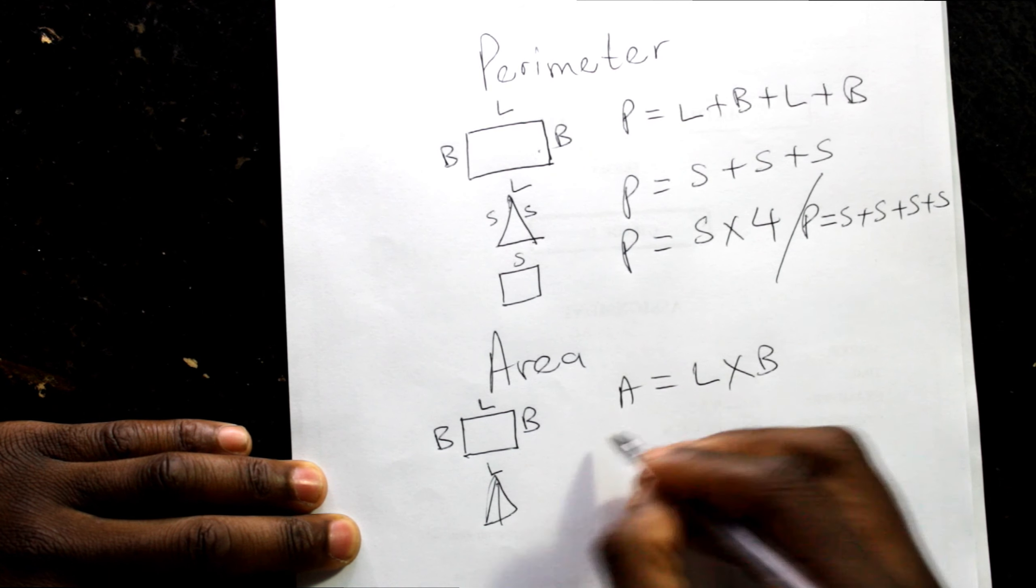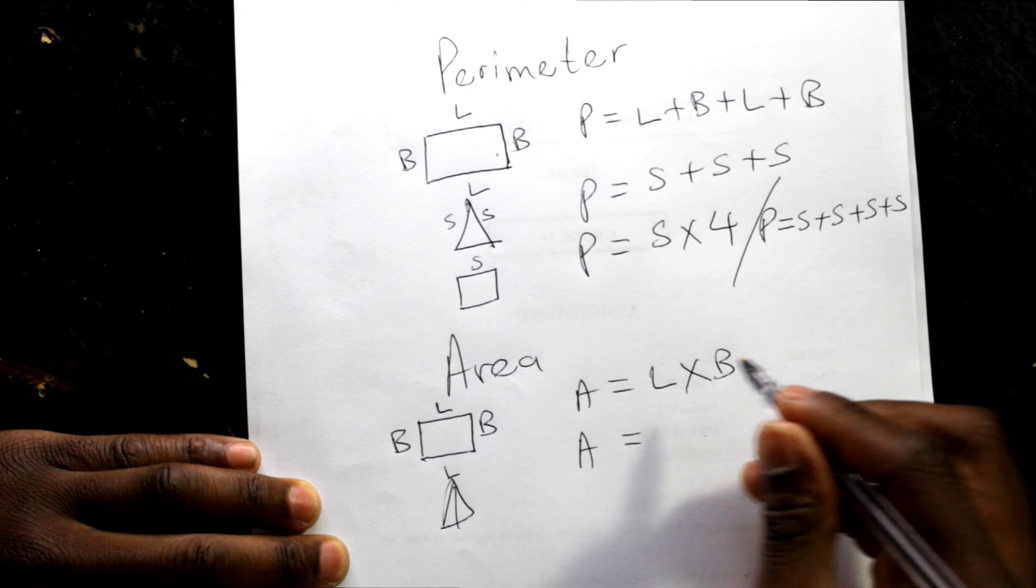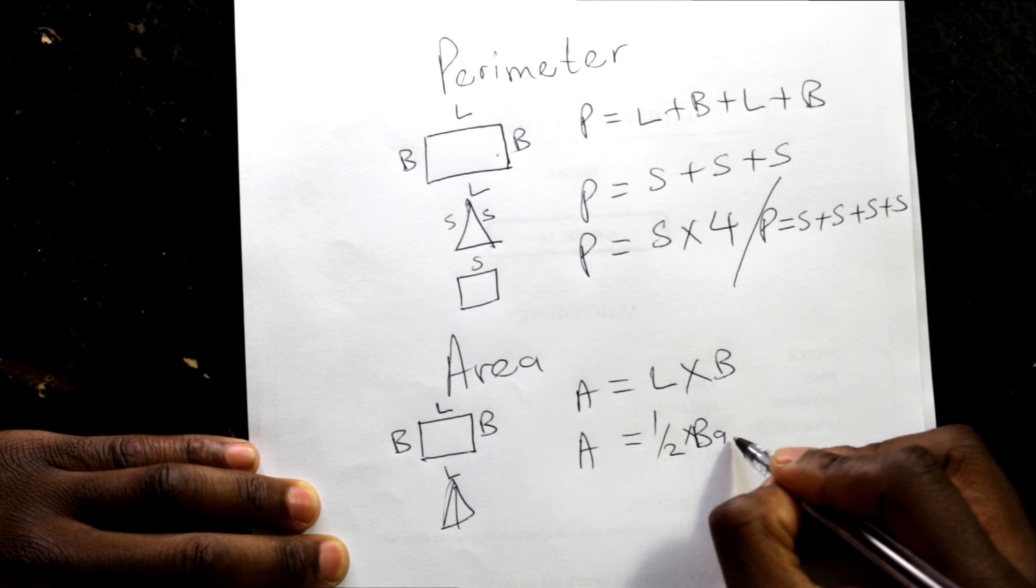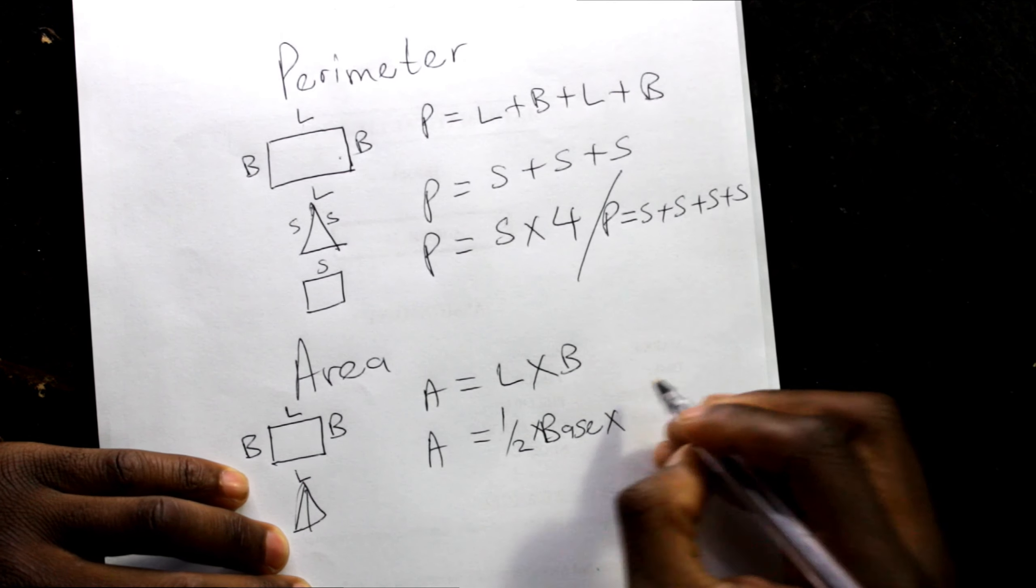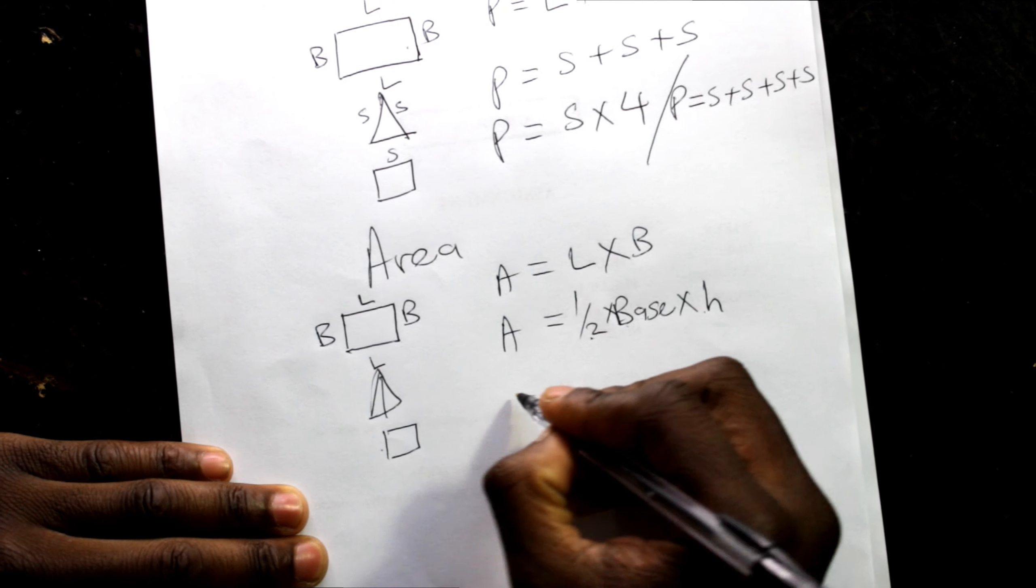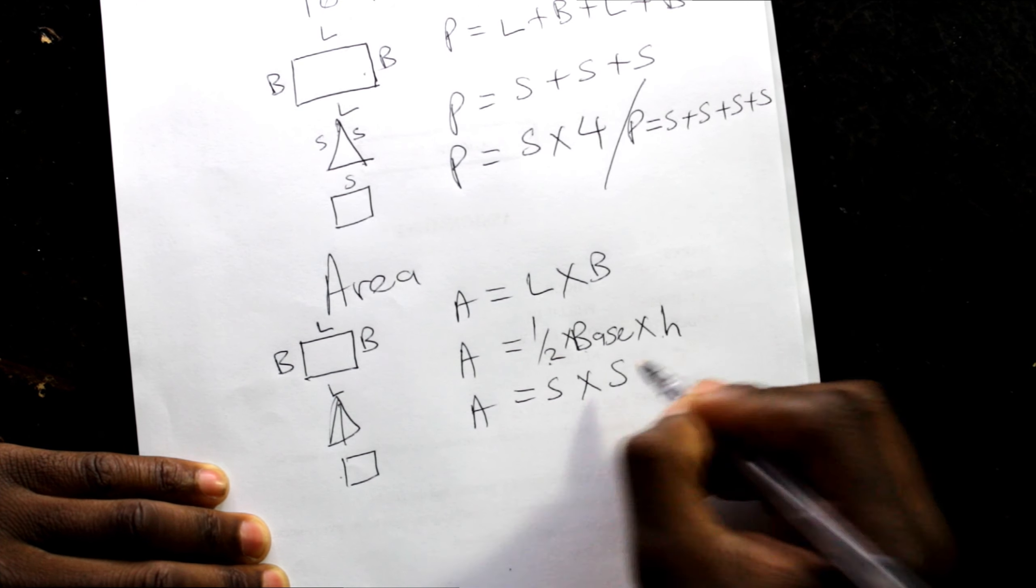For a triangle, area will say half base times height. For a square, area: side times side.